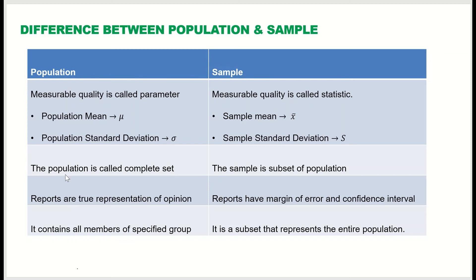The population is called the complete set — everything under study is the population — and the sample is just the subset of the population.